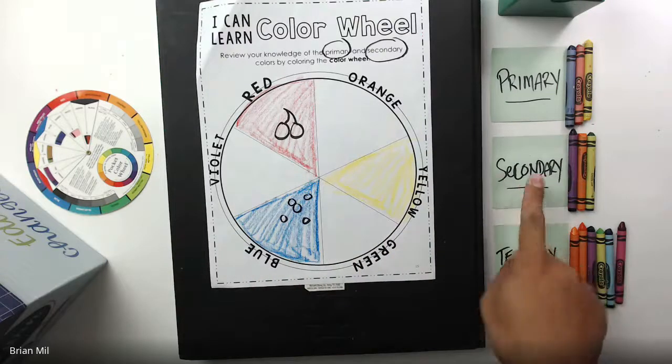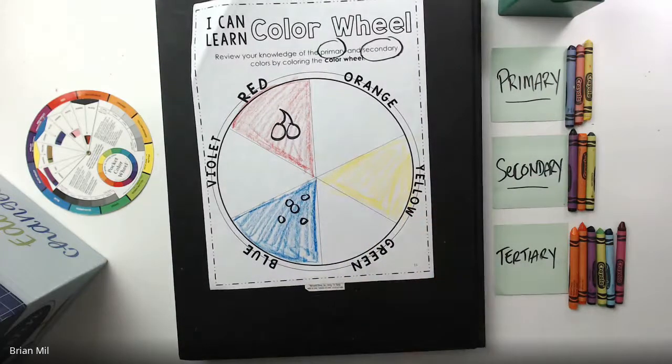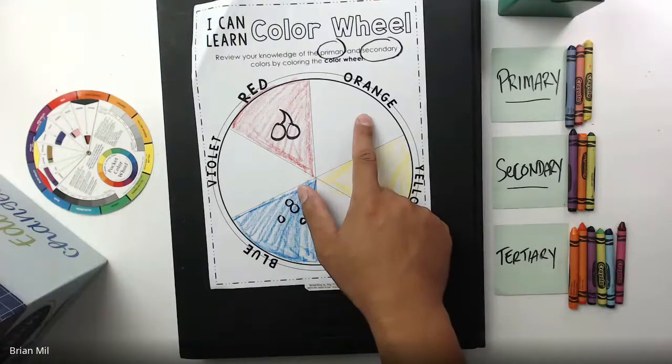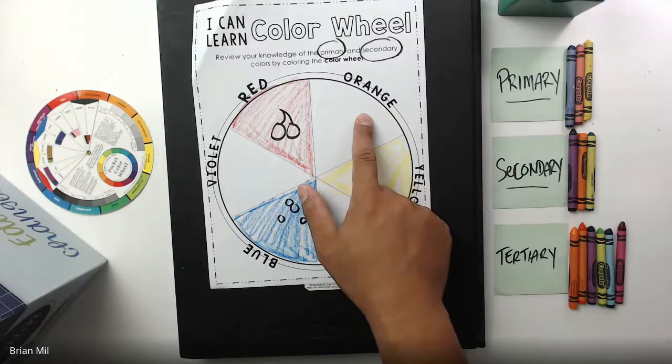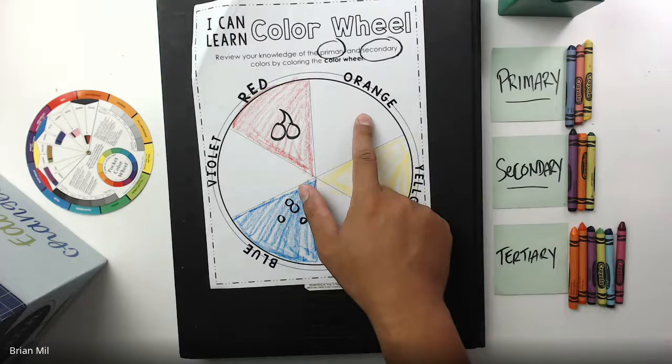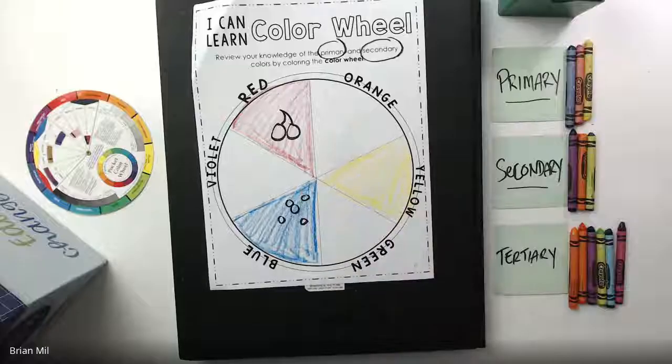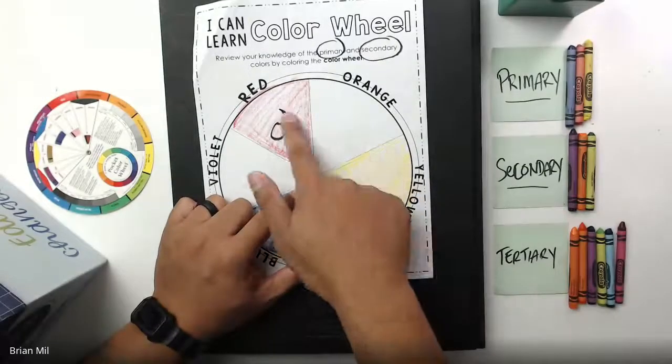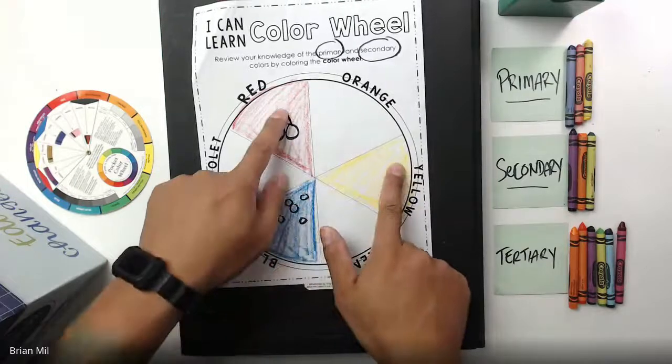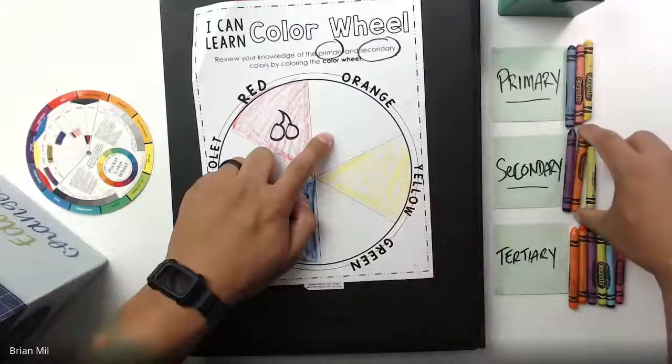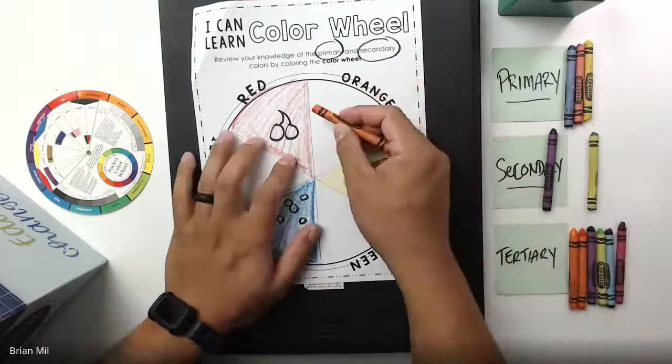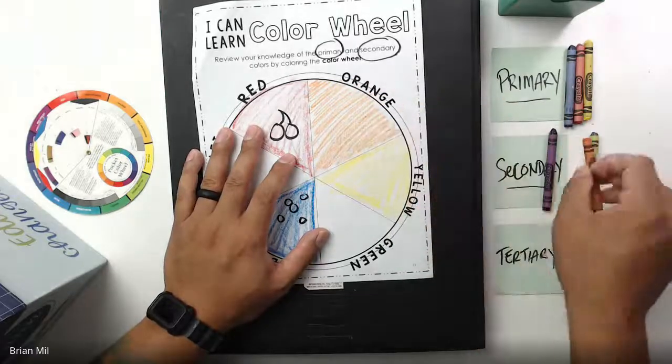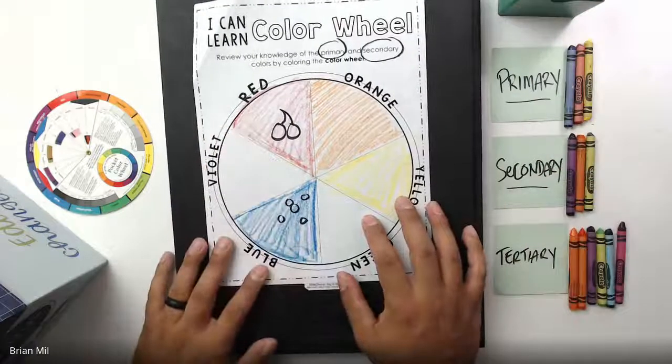But these next colors are called secondary colors. The next three are called secondary colors. So these include orange, green, and violet. Now orange is made by mixing two colors together. Anyone tell me what do you have to mix to get orange? Isa, do you know what it is? Red and yellow, good job. She found that out by looking at what's beside them in the color wheel. So red's on this side and yellow's on this side. In the middle of it is orange. So I want you guys to find an orange and then color that section orange. If you don't have something that's orange to color with, then I want you guys to draw something that's orange instead.